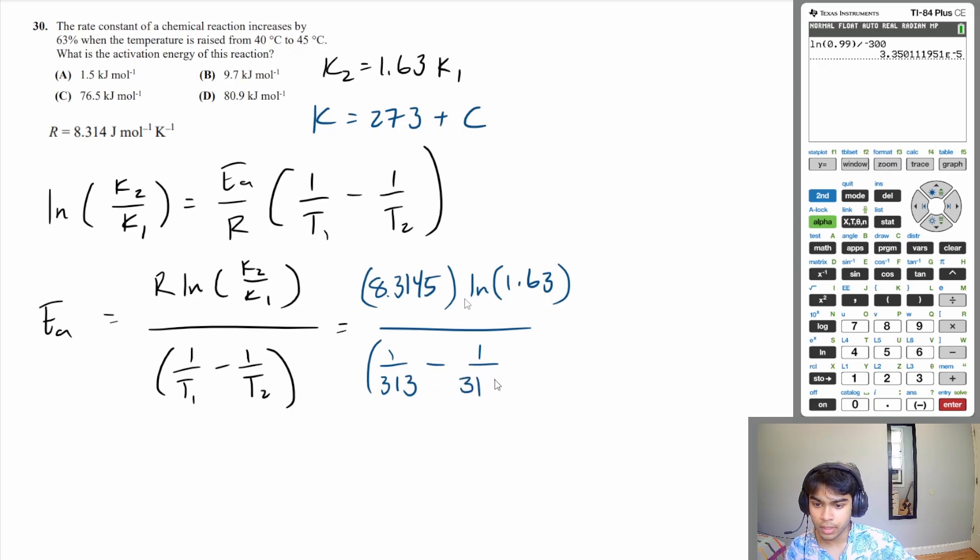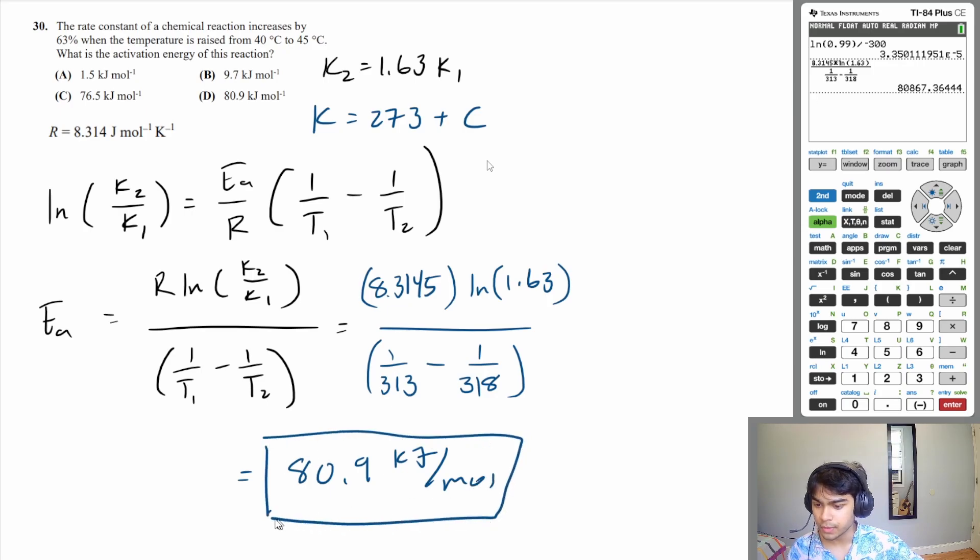And so if you plug this into your calculator, let's do 8.3145 times the natural log of 1.63 divided by 1 over 313 minus 1 over 318. And that is 80.9 kilojoules per mole. The value that you got in the calculator is in joules. So I just converted that into kilojoules. And that is answer choice D.